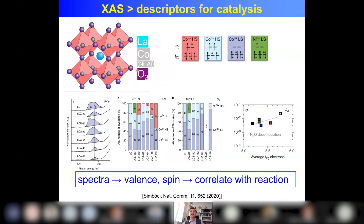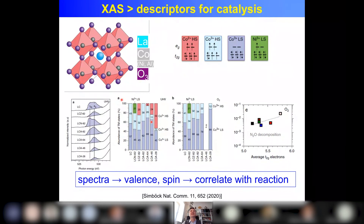Cobalt can be 2+, and then it will be high spin: T2G⁵ EG². Or it can be 3+, either high spin or low spin. Low spin is all T2G occupied and EG empty; high spin is 4 in T2G and 2 in EG. Now we do spectroscopy. This is the oxygen K-edge. The first peak in the oxygen K-edge is given by the transition metals — cobalt and nickel in this case. From the spectra we derive the different components of cobalt: for example, lanthanum cobalt oxide is 42% cobalt 3+ low spin, 5% cobalt 3+ high spin, and 53% cobalt 2+ high spin in vacuum.